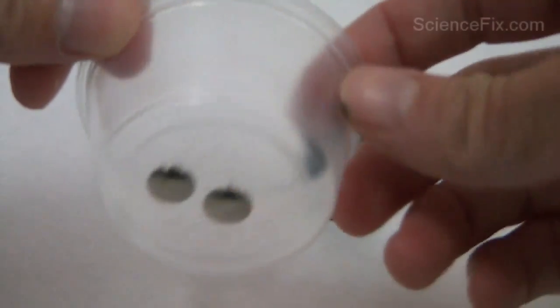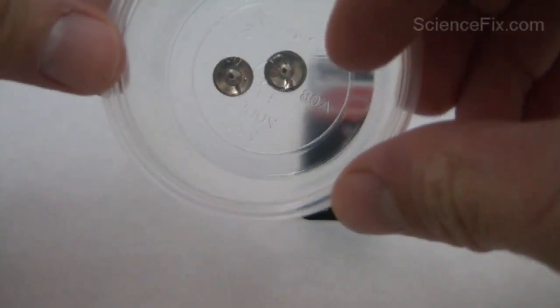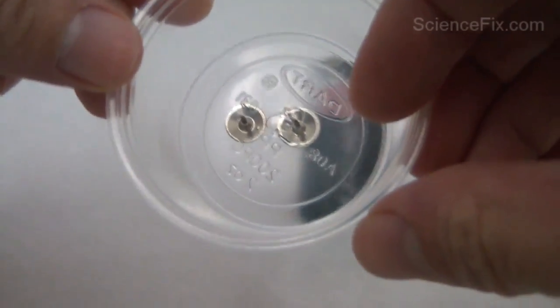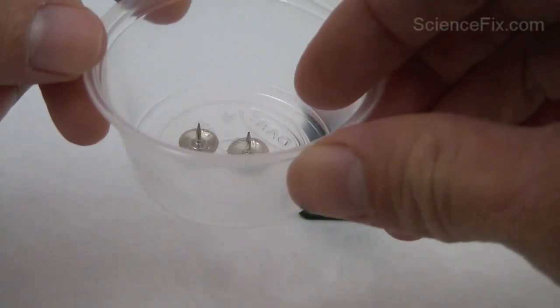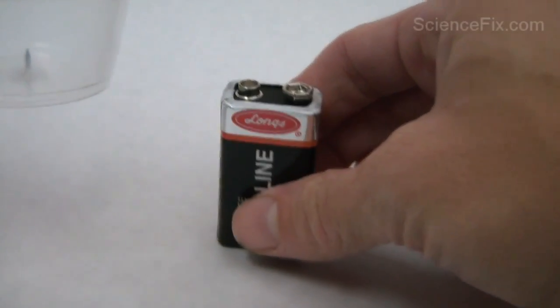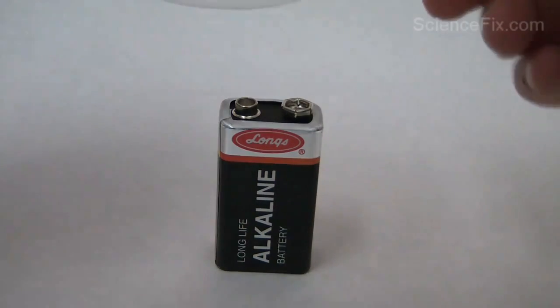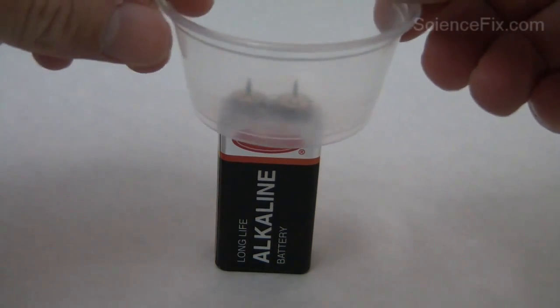In that small plastic container are two metal pushpins inserted at a distance that matches the spacing between the positive and negative leads of the 9 volt battery. Just insert them in there and make sure they're that distance apart.